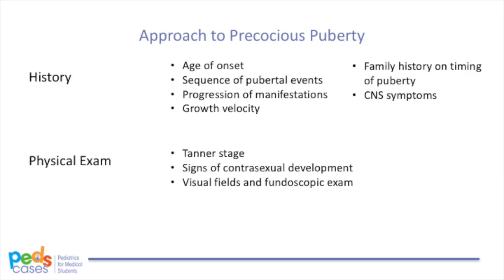Now that we've reviewed the different causes, we'll go over the approach to precocious puberty. The first step is taking a focused history: what do they mean by puberty — just hair growth, breast development, or genital development? When were the findings first noted, and how fast are they progressing? We also need to check height and growth velocity, since rapid growth suggests significant sex steroid production. Regarding family history, we need to ask the age of onset of puberty in parents and siblings. We also need to assess for signs or symptoms of increased intracranial pressure, such as headaches or visual impairment.